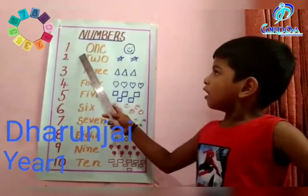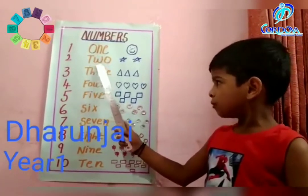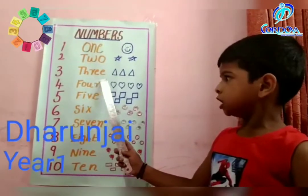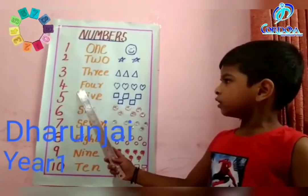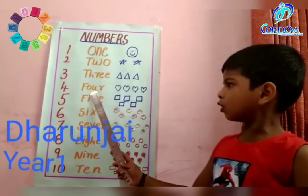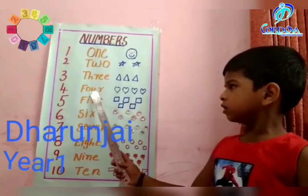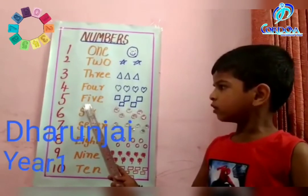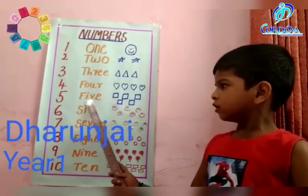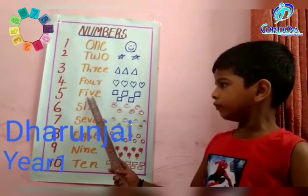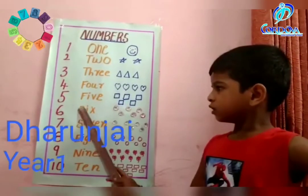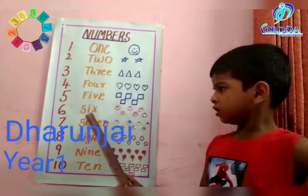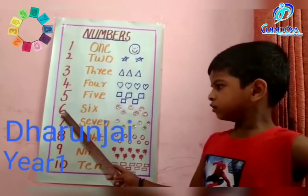Good morning. O, N, E — 1. T, W, O — 2. T, H, R, E, E — 3. F, O, R, U, R — 4. F, I, V, E — 5.